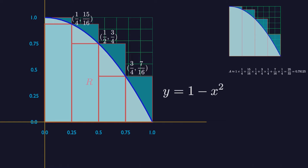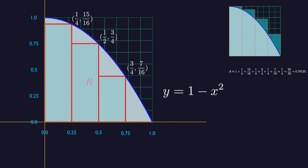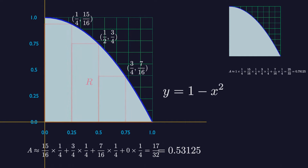Suppose instead we use four rectangles contained inside the region R to estimate the area. Each rectangle has width 1/4 as before, but the rectangles are shorter and lie entirely beneath the graph of our function. The height of each of these rectangles is given by the value of the function at the right-hand point of the sub-interval forming its base. Summing these rectangles, whose heights are the minimum value of the function over points x in the rectangle's base, gives a lower sum approximation to the area.